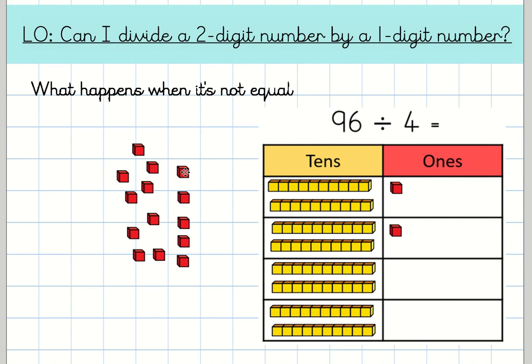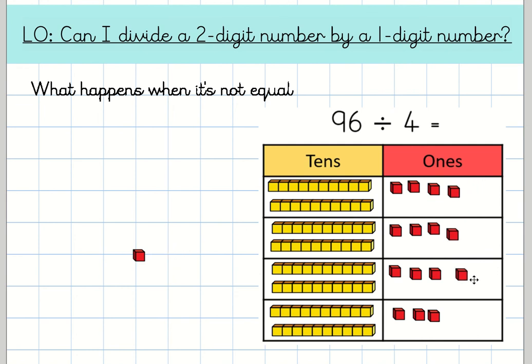So let's go. 1, 2, 3, 4. 1, 2, 3, 4. We can keep going. 1, 2, 3, 4. And luckily we've got four boxes and we've got four ones left. Which means that 96 divided by 4 equals 24. And again if we use our knowledge of multiplication and the fact that division is the inverse, which means the opposite, that also means that 24 multiplied by 4 equals 96.